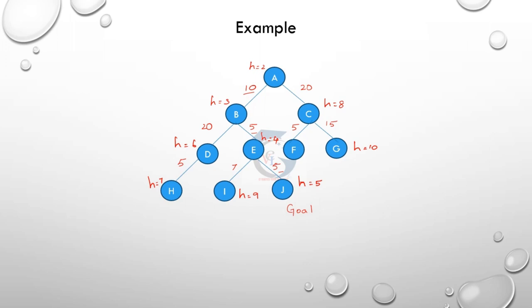But in best first search, we consider the heuristic value. Whichever heuristic value is minimum, we expand that node. Going from A to B or A to C: the heuristic value for B is equal to 3 and for C it is H equal to 8, so we select B. Then B to D, B to E — the value for C is equal to 6, and for E it is 4, so we select 4. Then E to I, E to J — H is equal to 5; we expand the minimum.